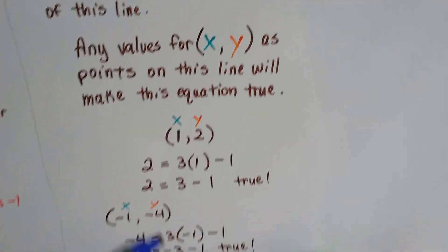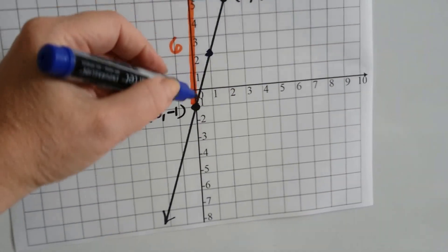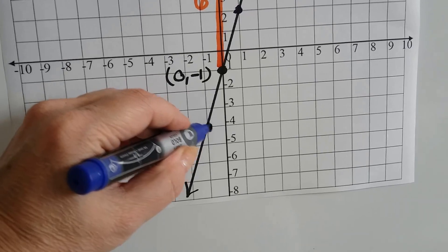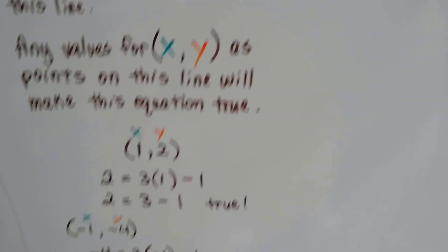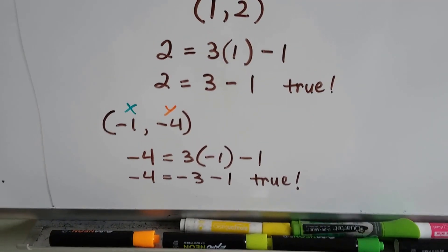Let's look at negative 1, negative 4. Negative 1, negative 4 is another point on this line. Negative 1 is here, and negative 4 is here, so that would be the point right here. So we could plug in negative 1 and negative 4 as our ordered pair, and this equation will be true again.